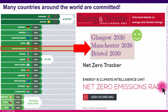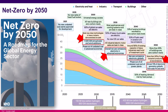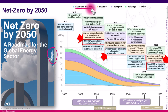Many countries around the world are committed to net zero. Most importantly, we have already defined a global path for net zero. Looking at the document 'Net Zero by 2050: A Roadmap for the Global Energy Sector' created by the International Energy Agency, it defines paths to reach net zero across several sectors: electricity and heat, industry, transport, buildings, and others.